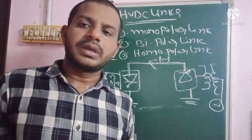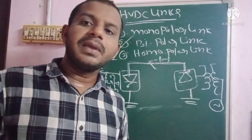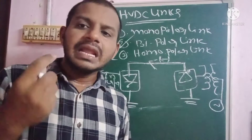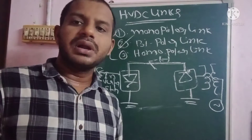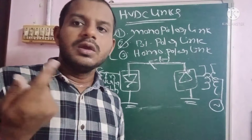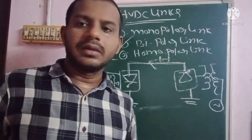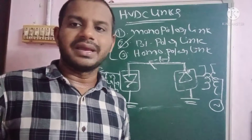One drawback of the monopolar link is that continuous power supply is not reliable. Since only a single conductor is used, if any fault occurs on that particular line, total interruption of power supply occurs to the consumers. Also, it is used at low voltage ratings only, not at high voltage ratings.